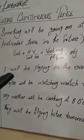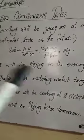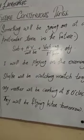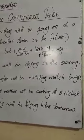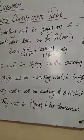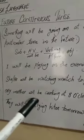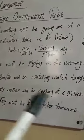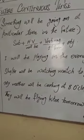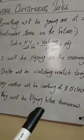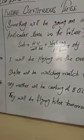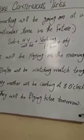Sentences دیکھیے: I will be playing in the evening — میں شام کو کھیل رہا/رہی ہوں گا/گی۔ He or she will be watching match tonight — وہ رات کو match دیکھ رہا/رہی ہوگا/گی۔ My mother will be cooking at 8 o'clock — میری mother جو ہے وہ رات کو 8 بجے cooking کر رہی ہوں گی۔ They will be flying kites tomorrow — وہ کل پتنگ اڑا رہے ہوں گے۔